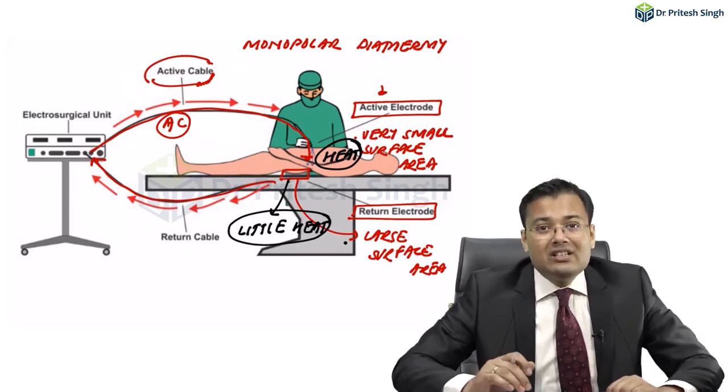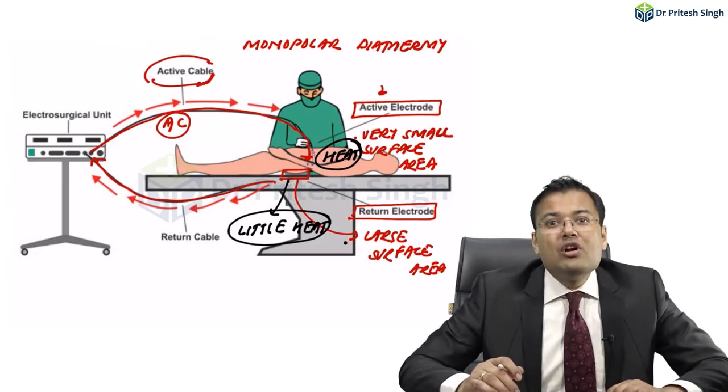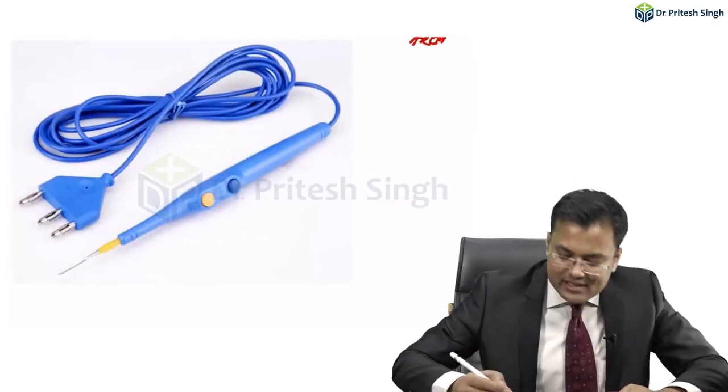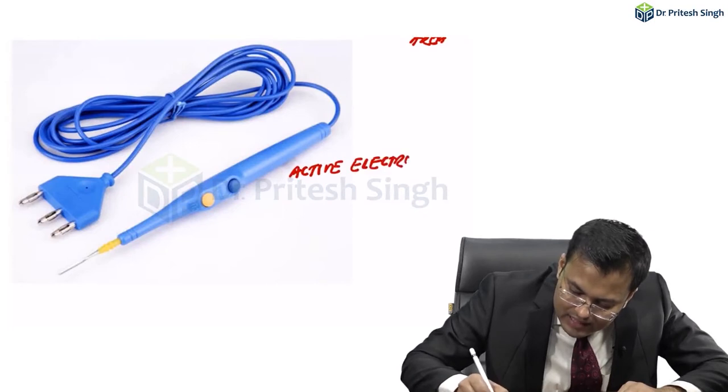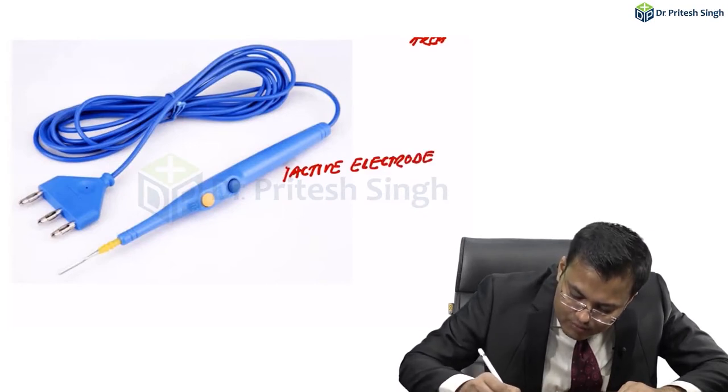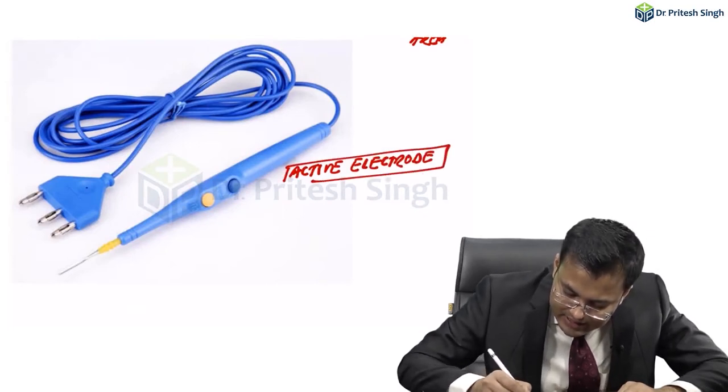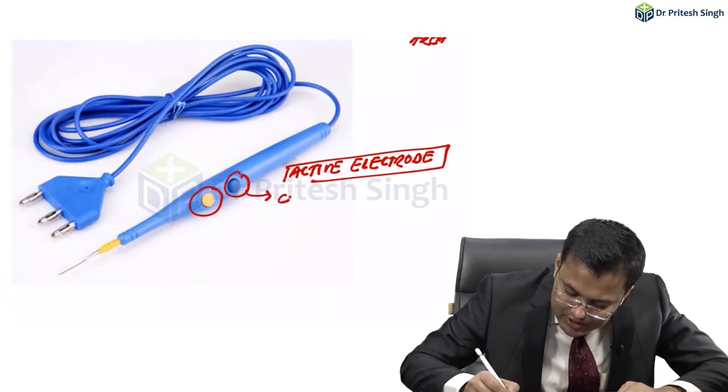See how the active electrode looks. This is the active electrode of monopolar cautery. Here you can see this is for cutting and this is for coagulation.